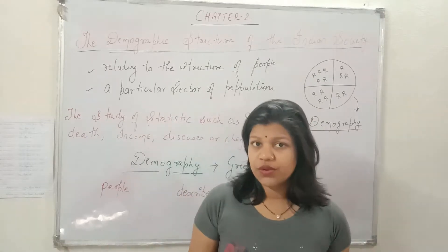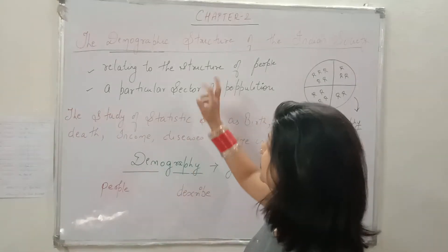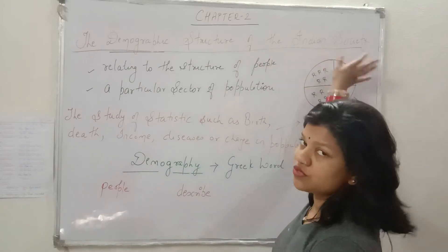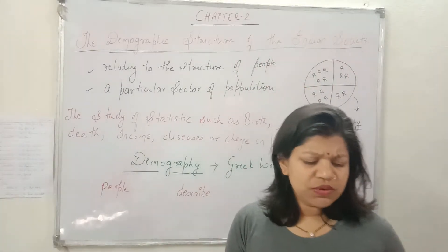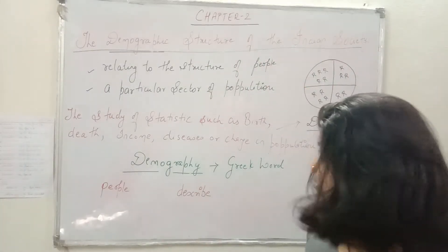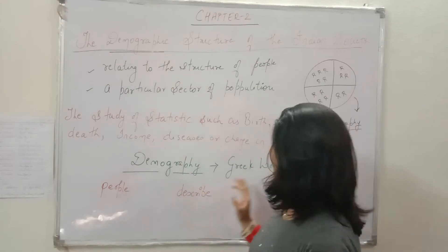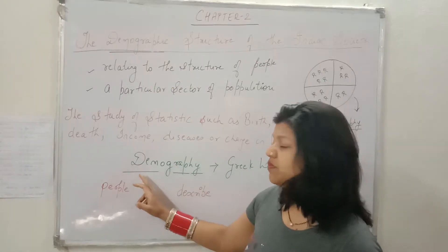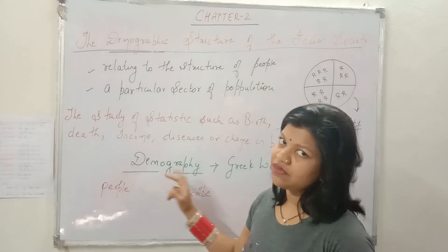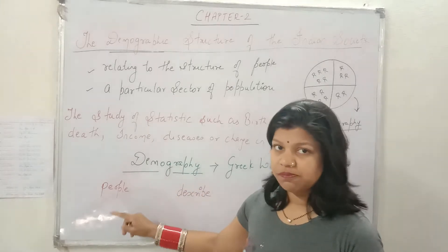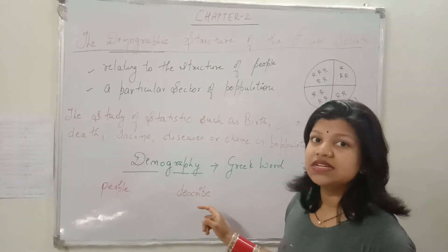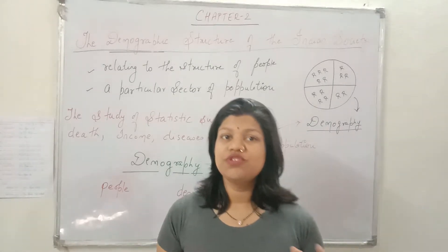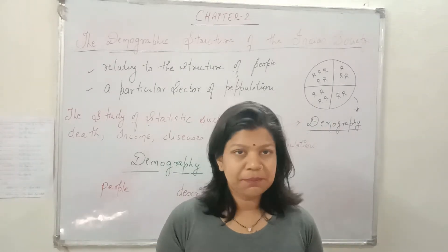In this book we are going on chapter number two, which is the demographic structure of Indian society. Let's learn about this word demography. Demography is a Greek word. If we break it into two parts, first is demo and second is graphic. Demo means people and graphic means describe, so demography means a thing which describes about the people.